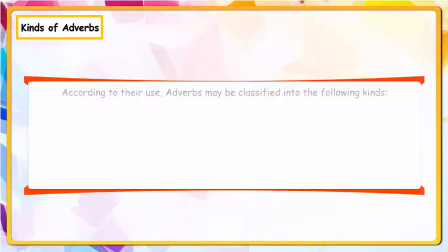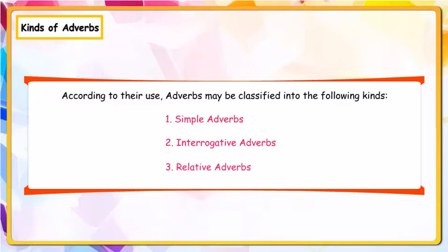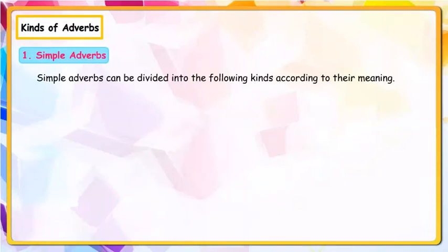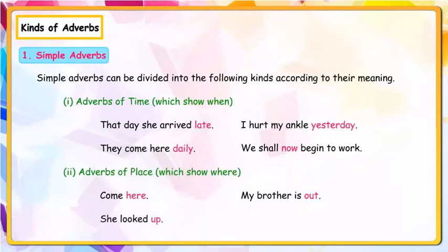Kinds of adverbs. According to their use, adverbs may be classified into the following kinds: Simple adverbs, Interrogative adverbs, and Relative adverbs. Simple adverbs can be divided into the following kinds according to their meaning. Adverbs of time, which show when: That day she arrived late; I hurt my uncle yesterday; They come here daily; We shall now begin to work.